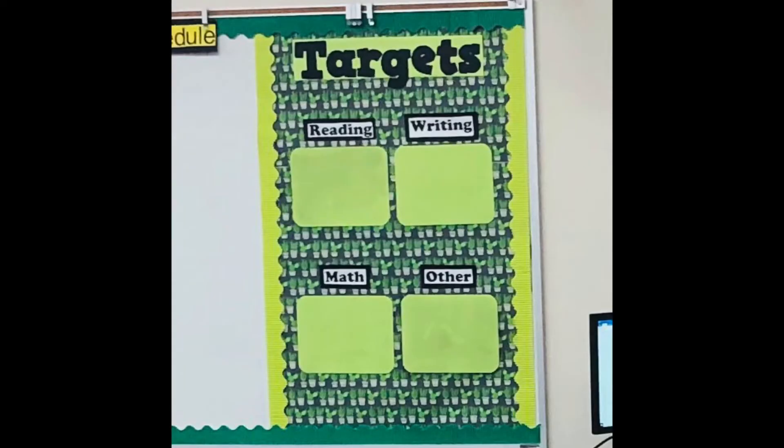The first thing I look at is an objective I want the kids to reach by the end of the lesson. I actually post this for the kids to see — I have a board called 'Targets' where I put different targets for each lesson in each area, so the kids know what they need to know by the end and it's very clear to them.